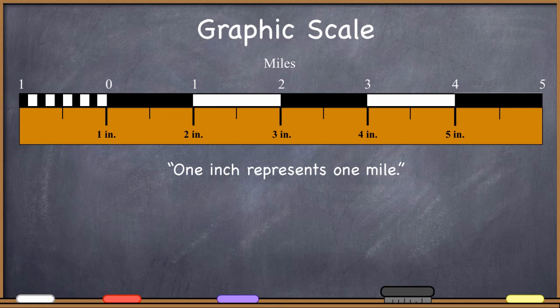So as you can see, you can actually convert from expressing scale in one way to another way. If this were your graphic scale right here, and it were true that you've got the zero to one inch and you've got exactly one inch there, then you can create a verbal scale out of this. One inch represents one mile. So here's the verbal scale representation, and there's the graphic scale representation.